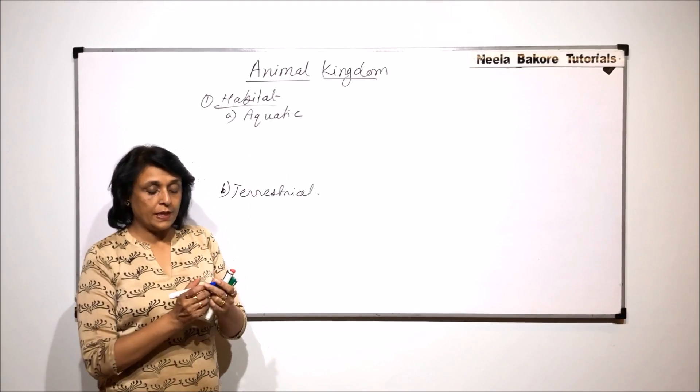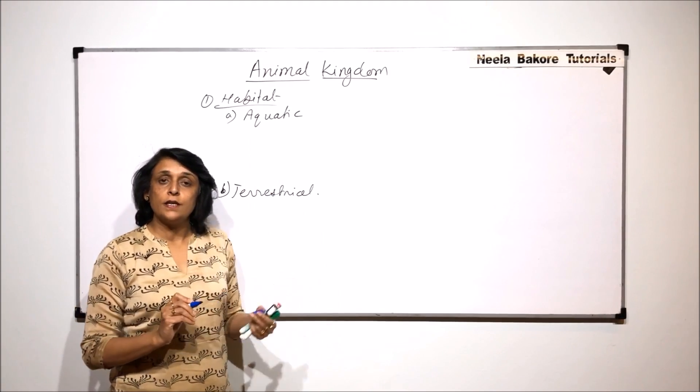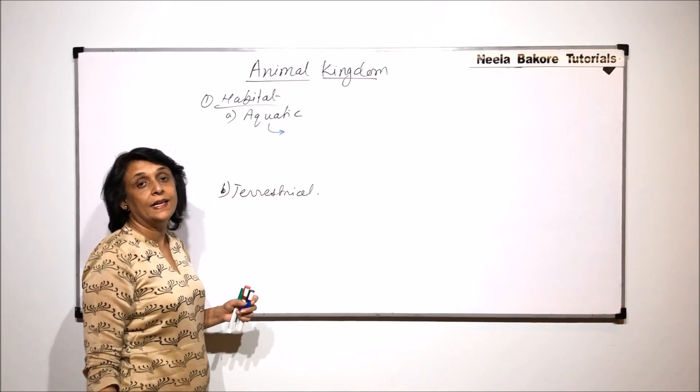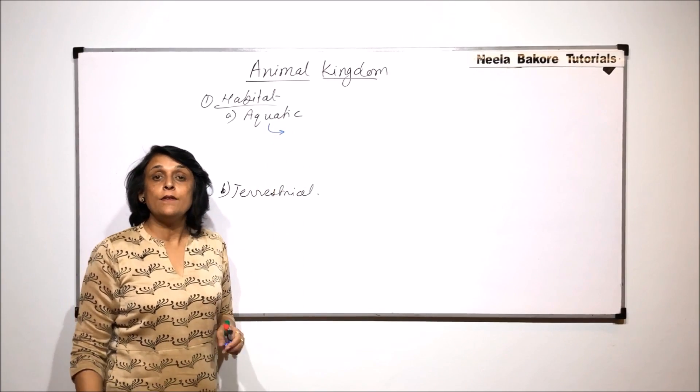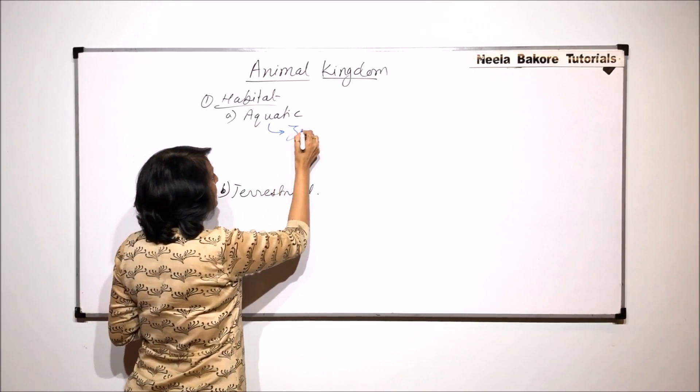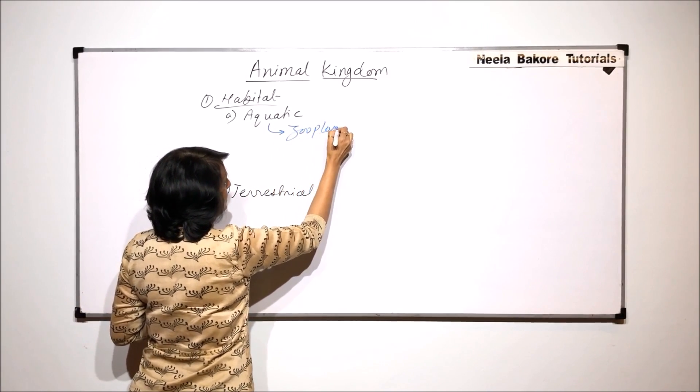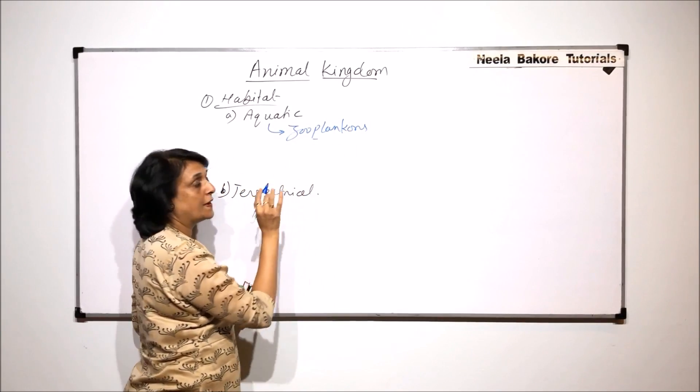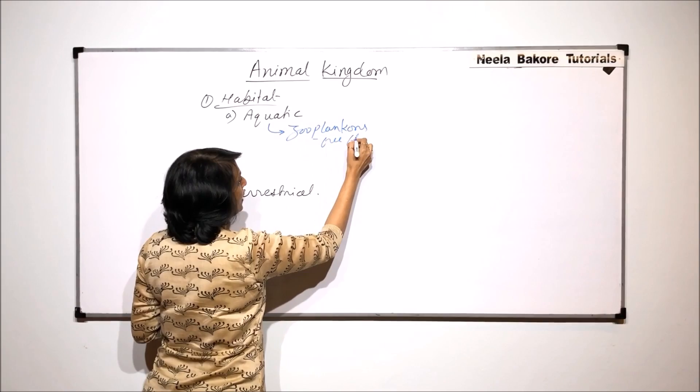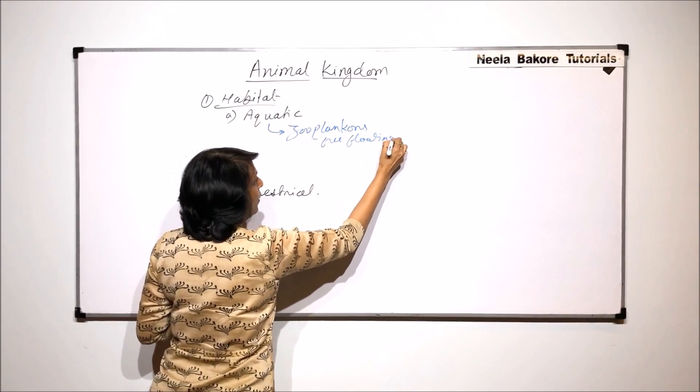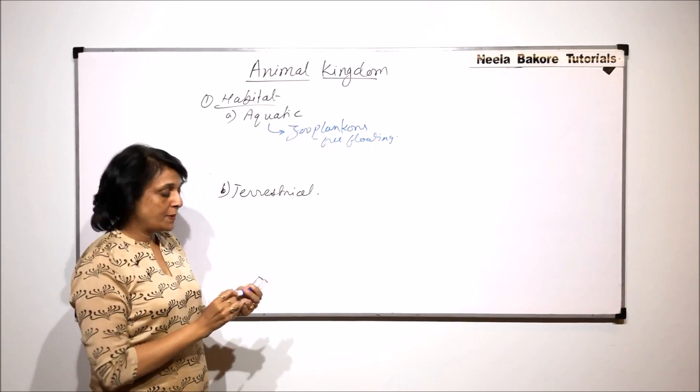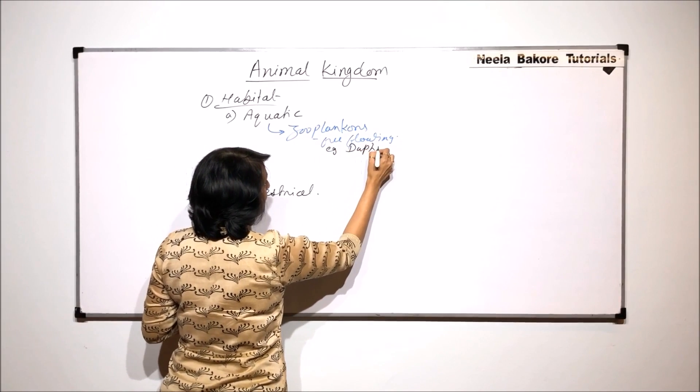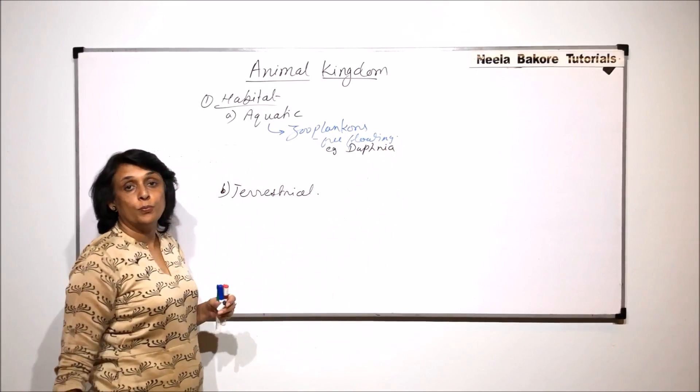Now when we talk of aquatic, we need to further subdivide this on the basis of where exactly in the water body. If they are free floating, then we call them zooplanktons. Zooplanktons are found on the surface, free floating on the surface. Example can be Daphnia or Cyclopes.